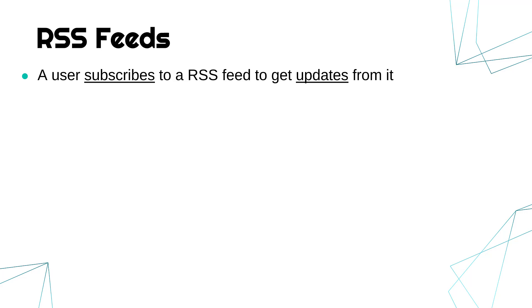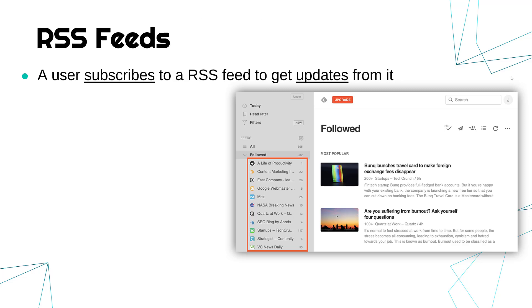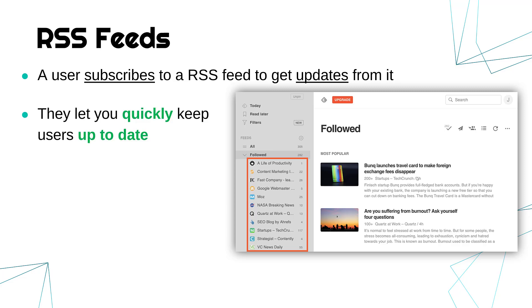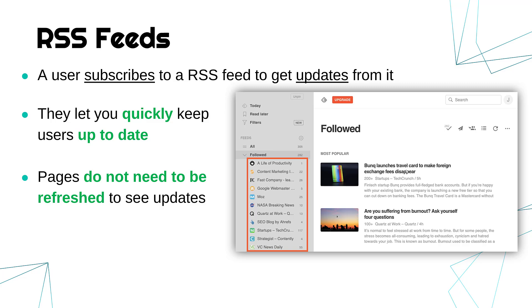The final information format to cover is RSS feeds. What the acronym stands for is not important, and they're not the most modern technology — not used nearly as often as they used to be. An RSS feed works by a user subscribing to the feed and getting updates from it. You might subscribe to multiple different feeds, a bit like subscribing to a channel on YouTube. As soon as new updates are launched, they appear in the feed. It's a bit like a newsletter but combined together and live — very quick to get users up to date, and it happens straight away without needing to refresh the page.